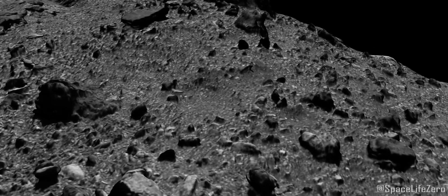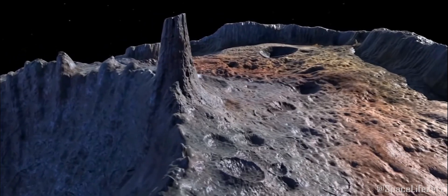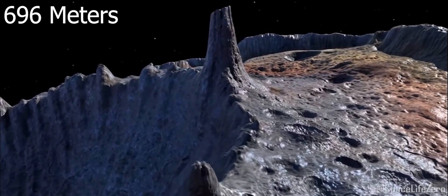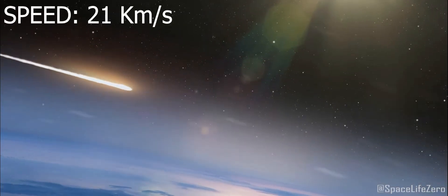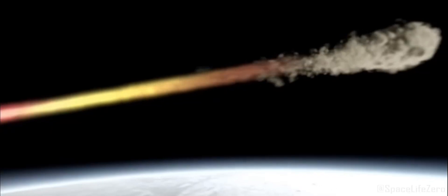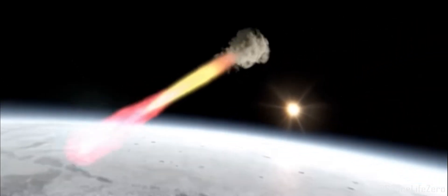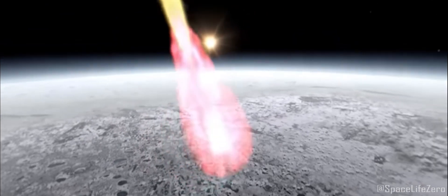The asteroid 2008QY is estimated to be about 696 meters in diameter. It's cruising through space at a speed of approximately 21 kilometers per second, which is roughly 75,600 kilometers per hour. That's fast.